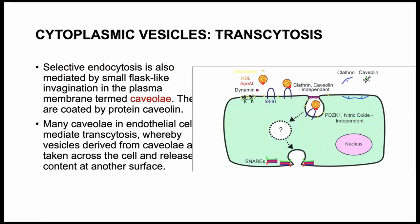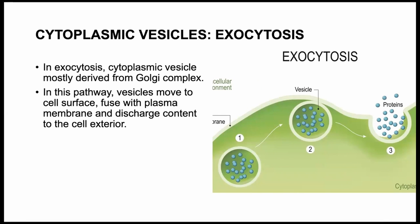There's also transcytosis — selective endocytosis mediated by flask-like invaginations in the plasma membrane called caveolae, specifically coated by proteins called caveolin. Many caveolae in the epithelial cell mediate transcytosis, whereby vesicles derived from the Golgi complex move to the cell surface, fuse with the plasma membrane, and discharge their contents to the exterior — basically picking up stuff with the vesicle and pushing it outside of the cell.